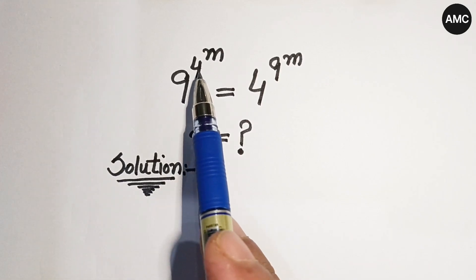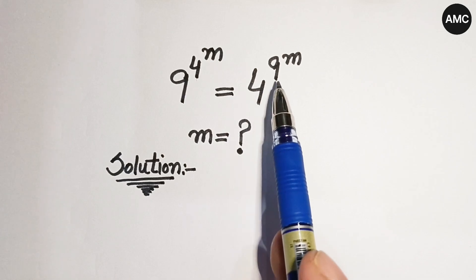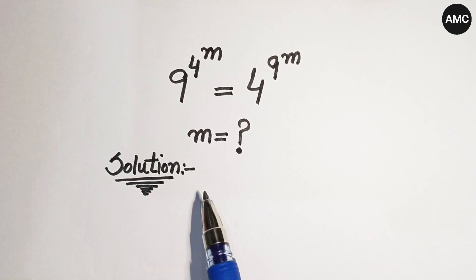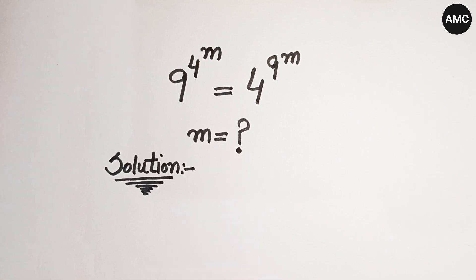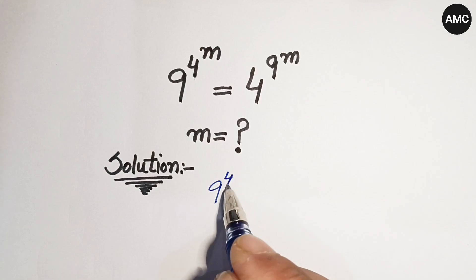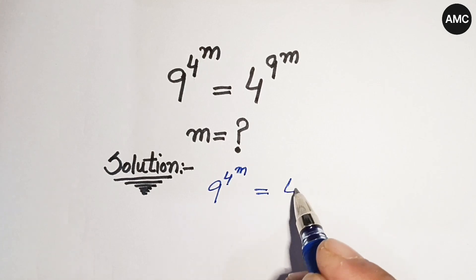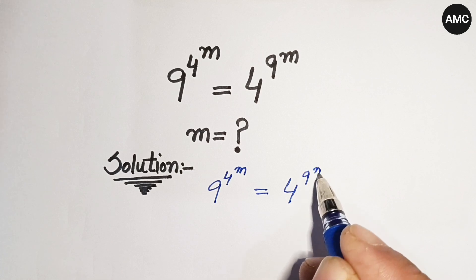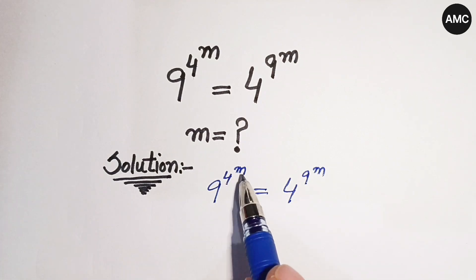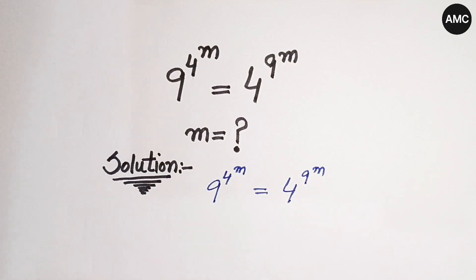So 9 to the power 4 to the power m is equal to 4 raised to the power 9 to the power m. We have to find the value of m. Starting our solution: 9 to the power 4 to the power m is equal to 4 to the power 9 to the power m, where 4 to the power m and 9 to the power m are our exponents.